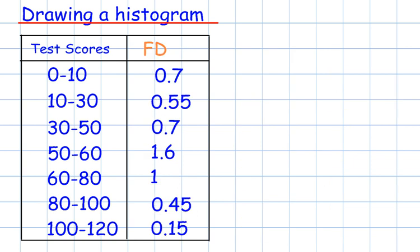On the bottom axis, the x-axis, it needs to go from 0 to 120. And the highest frequency density is 1.6, so my scale needs to go from there, which will look like this.